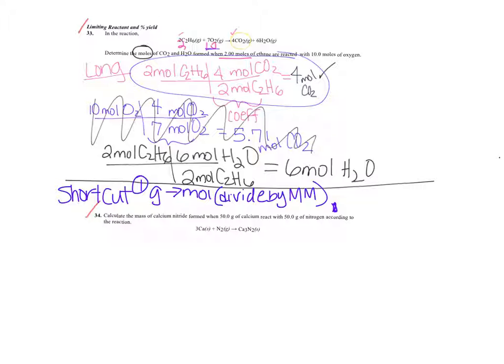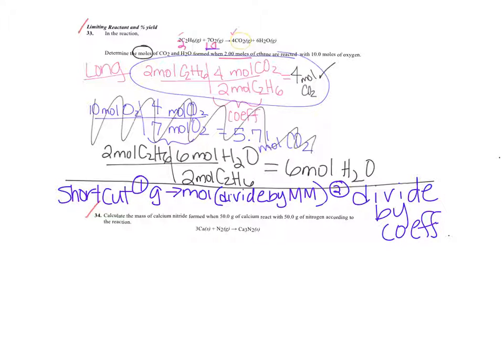Once they're in moles, the next step is to divide by the coefficients. That's what makes the shortcut so nice — you don't have to do railroad tracks. Divide by molar mass to get into moles, then divide by coefficients. In this problem it was already in moles, so we could have done two divided by two, and ten divided by seven — which is more than one — so we knew ethane was the limiting reactant.